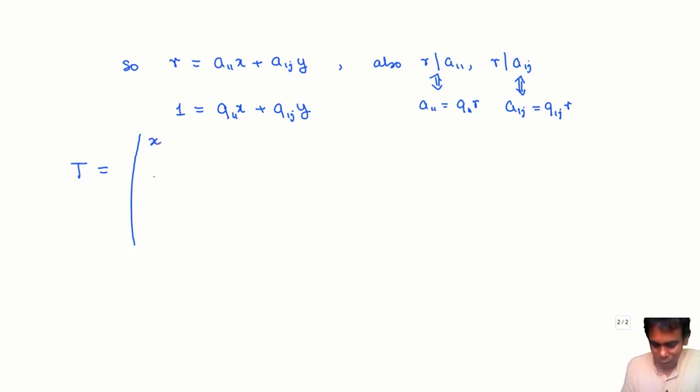And this matrix T is of the following form. In the one-one position I am going to put x, and it is going to have mostly zeros everywhere. But in the jth row here I will put y, and then I will have identity ones along the diagonal.